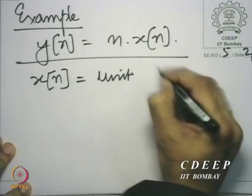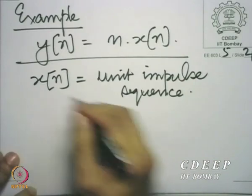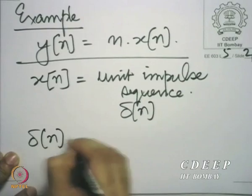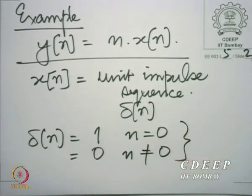Let us take a simple example of a system that does not obey shift invariance: y[n] = n·x[n]. The output at point n is the input at point n multiplied by n — the system is sneakily looking at the clock. Now, let us introduce the unit impulse sequence, denoted δ[n], which equals 1 for n=0 and 0 for all other n.